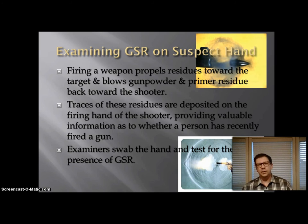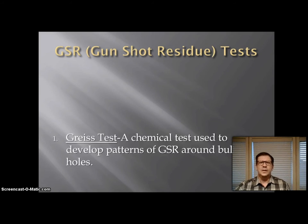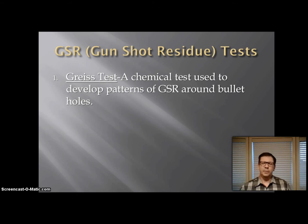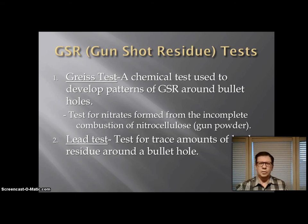When a person fires a weapon, GSR or gunshot residue ends up being sprayed back toward the shooter. You can see in the example the cloud of gunshot residue coming back onto the shooter's hands and clothing. One of the things a forensic scientist does is swab the hand or clothing for the presence of GSR. One GSR test is called the grease test — a chemical test that looks for the nitrates left over from the gunpowder itself. There's also a test for the presence of lead, trace amounts of lead around a bullet hole, since many bullets have lead content or are made of lead.